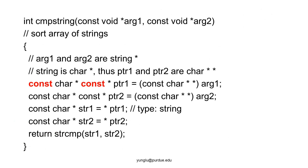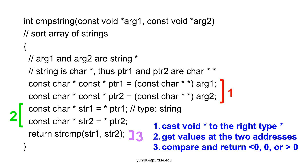Going back to the comparison function for strings: the two consts for ptr1 mean we cannot change the value of ptr1, nor can we use the left-hand side rule to change the value at the address pointed to by ptr1. When writing a comparison function for qsort, it is important to follow three steps: the first step casts the input arguments to the correct types; the second step uses the right-hand side rule to retrieve the values at the addresses; the third step compares the values and returns a negative integer, zero, or a positive integer.